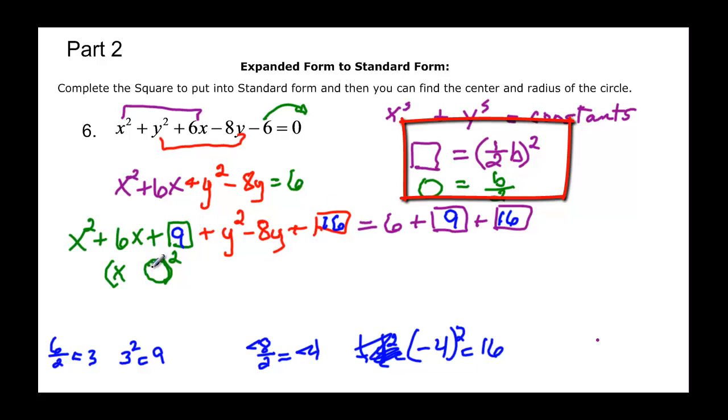Because if I unsquare 9, I get to 3. If I double 3, I get to 6, and it was a positive 3, so x plus 3 quantity squared. And then we do the same thing with the y's. I unsquare the y squared, and it's just y.